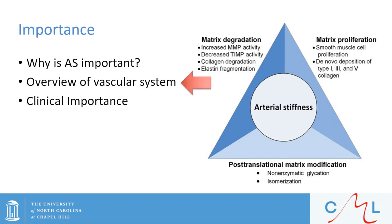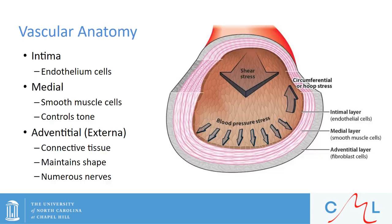Let's take a step back and take an overview of the vascular system. If we look at a given blood vessel, we will see that it is composed of three layers. The innermost layer — the intima — is where we find the endothelial cells. The medial layer is where we find the smooth muscle cells, and this layer controls the tone of a blood vessel. The outer layer — the adventitia or externa layer — contains the connective tissue, and this layer is important for maintaining the shape of the vessel. This is where we will also find the innervation of nerves.